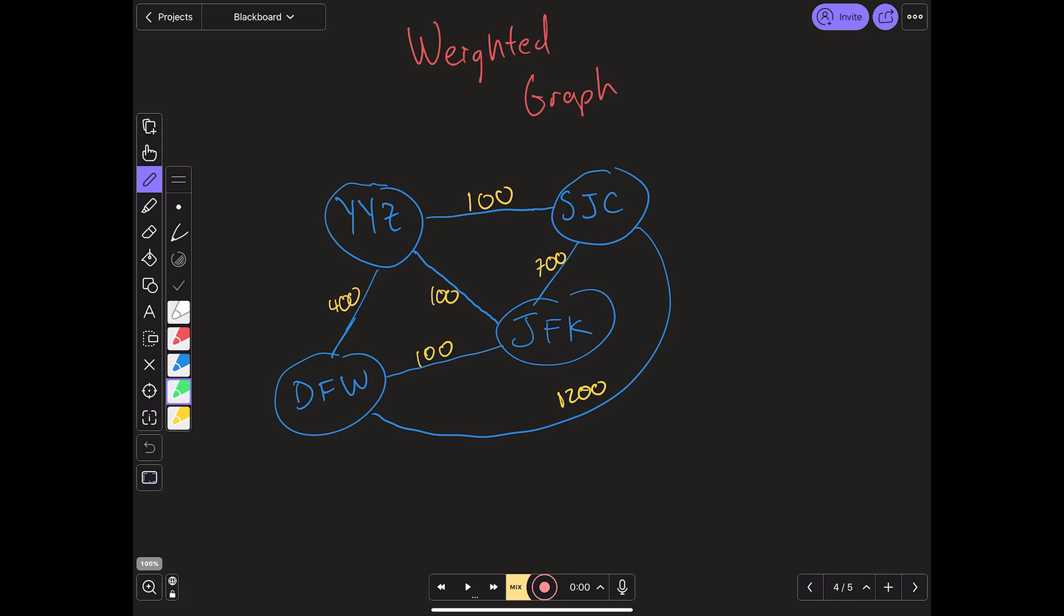So now here's another example, a more realistic example of a weighted graph. You can see here I have a bunch of different airports. We have YYZ which is Toronto, SJC which is San Jose in California, JFK, and Dallas-Fort Worth. Now let's say we wanted to go from SJC to DFW. Well this is a common application for a graph algorithm. We know it's possible to get from one place to another, but we want to find the cheapest way to get there. As you can see the direct flight is quite expensive at $1200.